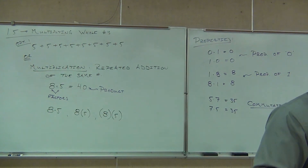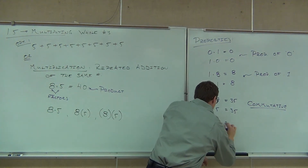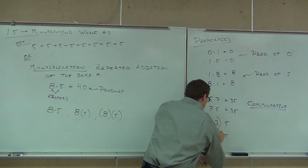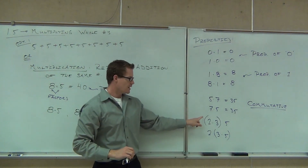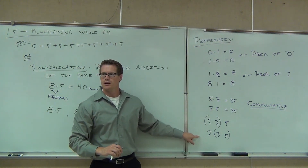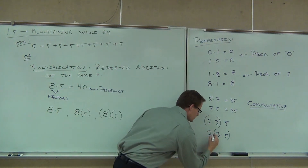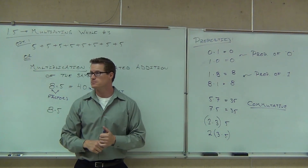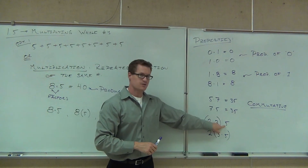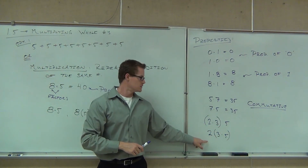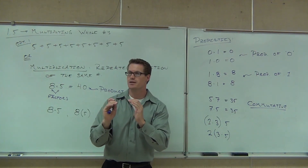There are two more properties. If I have two times three times five and I group them as (2×3)×5 or 2×(3×5) — remember parentheses mean do this first — am I going to get two different answers? Do them in your head. Either way you get thirty: six times five is thirty, and two times fifteen is thirty. So either way we're getting thirty. Do you remember that addition did the same thing? It didn't matter how you grouped or associated them. That's the associative property.